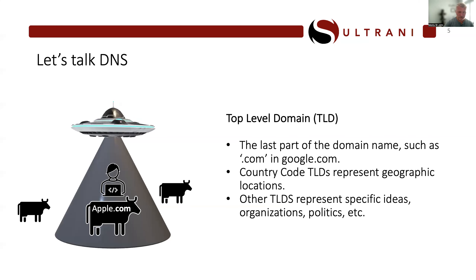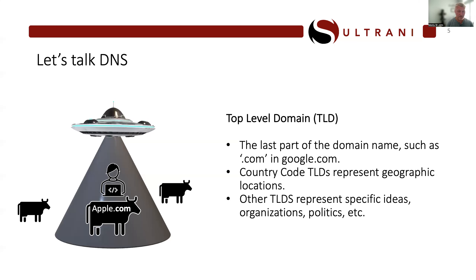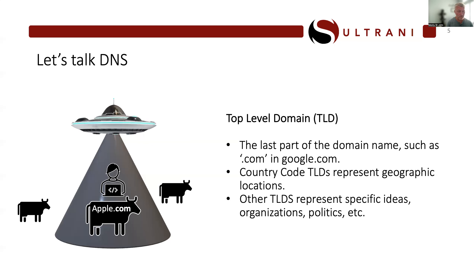There are different types of TLDs. One category is country code TLDs. Just as there are TLDs for .com, .net, .org, and .gov, there are also country code TLDs — the next tier down — representing a geographic area. For the United Kingdom it's .co.uk — a country code TLD, or ccTLD, representing an entity that should exist in the United Kingdom.